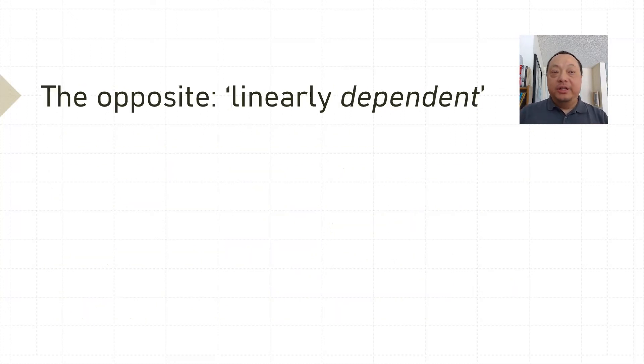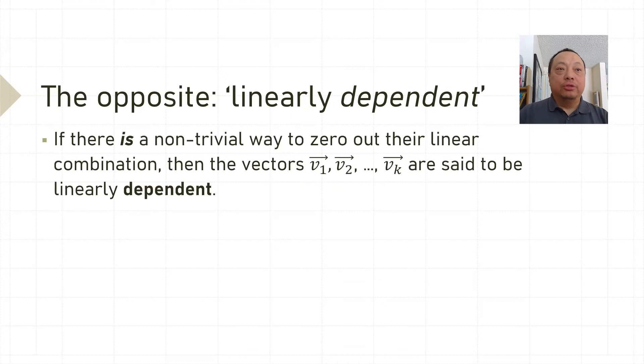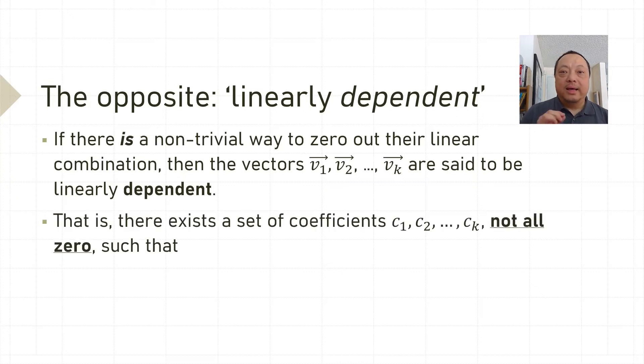The opposite of linearly independent is linearly dependent. If there is a non-trivial way to zero out their linear combination, then the vectors v1, v2 up to vk are said to be linearly dependent. That is, there exists a set of coefficients not all 0. Some may be 0, but there has to be some non-zero, such that c1*v1 + c2*v2 + ... + ck*vk equals the 0 vector.